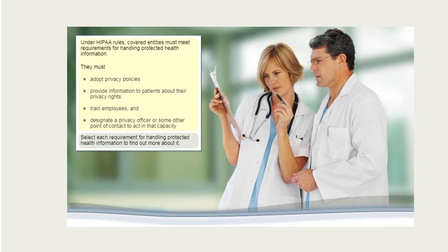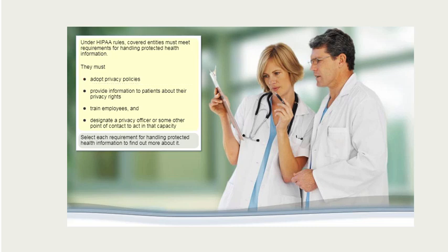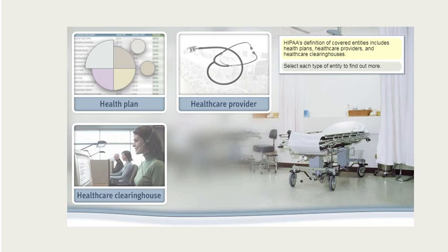Under HIPAA rules, covered entities must meet requirements for handling protected health information. They must adopt privacy policies, provide information to patients about their privacy rights, train employees, and designate a privacy officer or some other point of contact to act in that capacity. HIPAA's definition of covered entities includes health plans, health care providers, and health care clearinghouses.